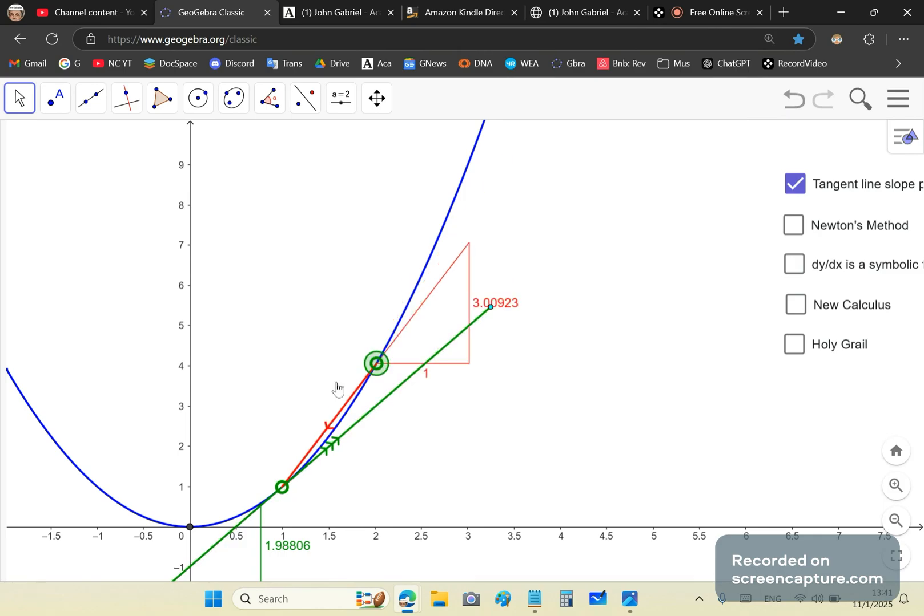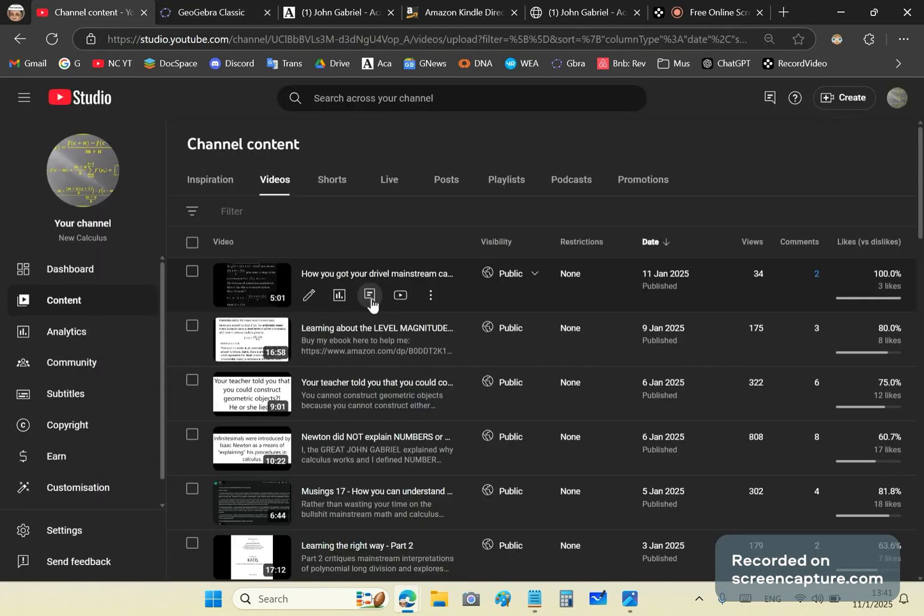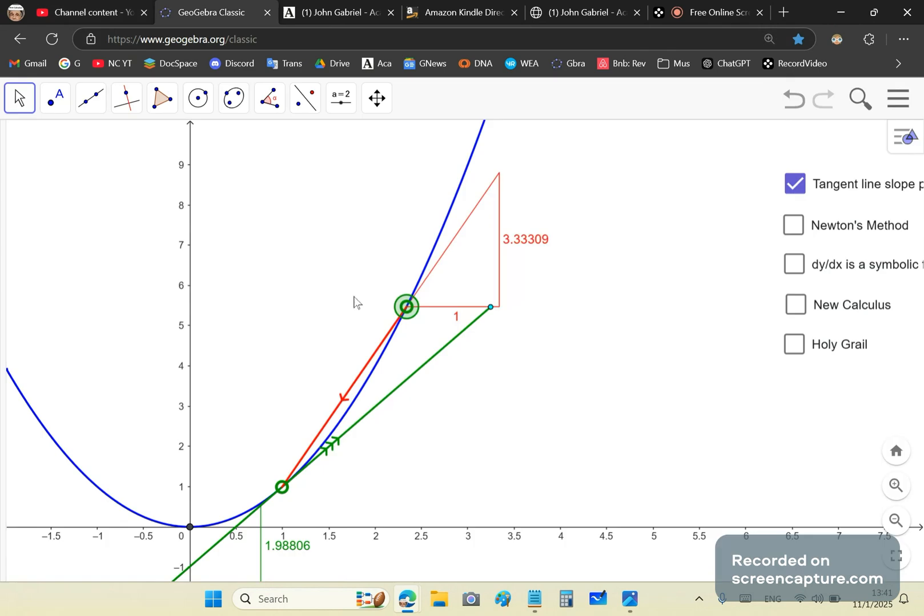So as the secant becomes shorter, remember, if you watched my previous video, how you got your drivel mainstream calculus, you'll see that as your secant gets shorter, your secant line slope looks more and more like this slope. So watch the red and the green. See the red and the green? So it's starting to look more like it, right?